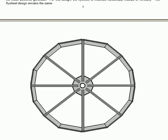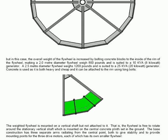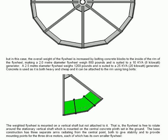It is a large steel construction which is simple enough to construct and build. But in this case, the overall weight of the flywheel is increased by bolting concrete blocks to the inside of the rim of the flywheel, making a 2 meter diameter flywheel weigh 800 pounds and is suited to a 10 kVA generator. A 2.5 meter diameter flywheel weighs 1200 pounds and is suited to drive a 20 kVA generator.